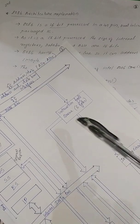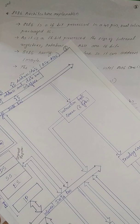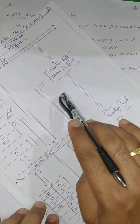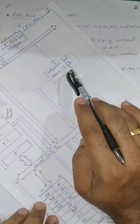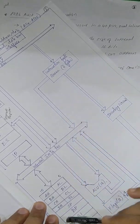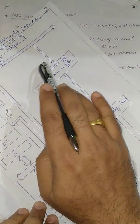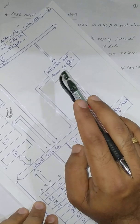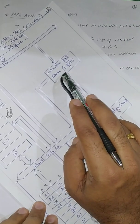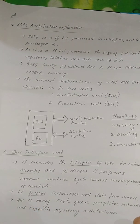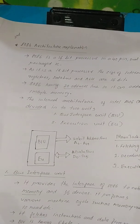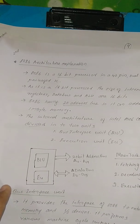The six-byte queue enables pipeline architecture. While instructions are executing in the Execution Unit, the next instructions can be prefetched and kept in this queue — a kind of parallel processing. Execution is done in the EU while prefetching happens simultaneously, so instructions are ready in the pipeline. This speeds up overall processing of the 8086 microprocessor. The use of the six-byte queue is prefetching instructions, which increases speed of operation.